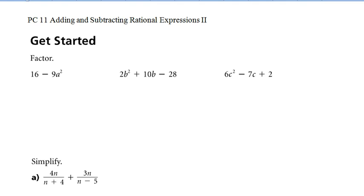Our first example is to get us re-familiarized with factoring. We've got 16 minus 9a squared. Notice that 16 is the same as 4 squared, and 9a squared is the same as 3a all squared. So we've got a difference of squares. That's 4 plus 3a times 4 minus 3a.